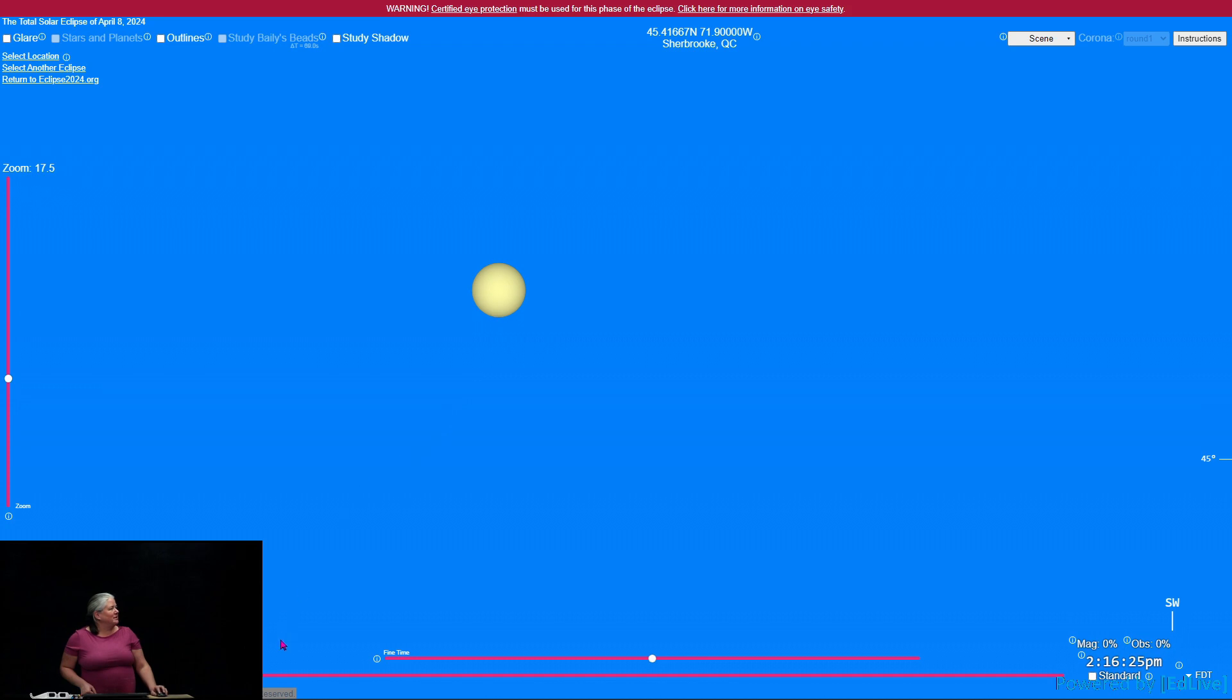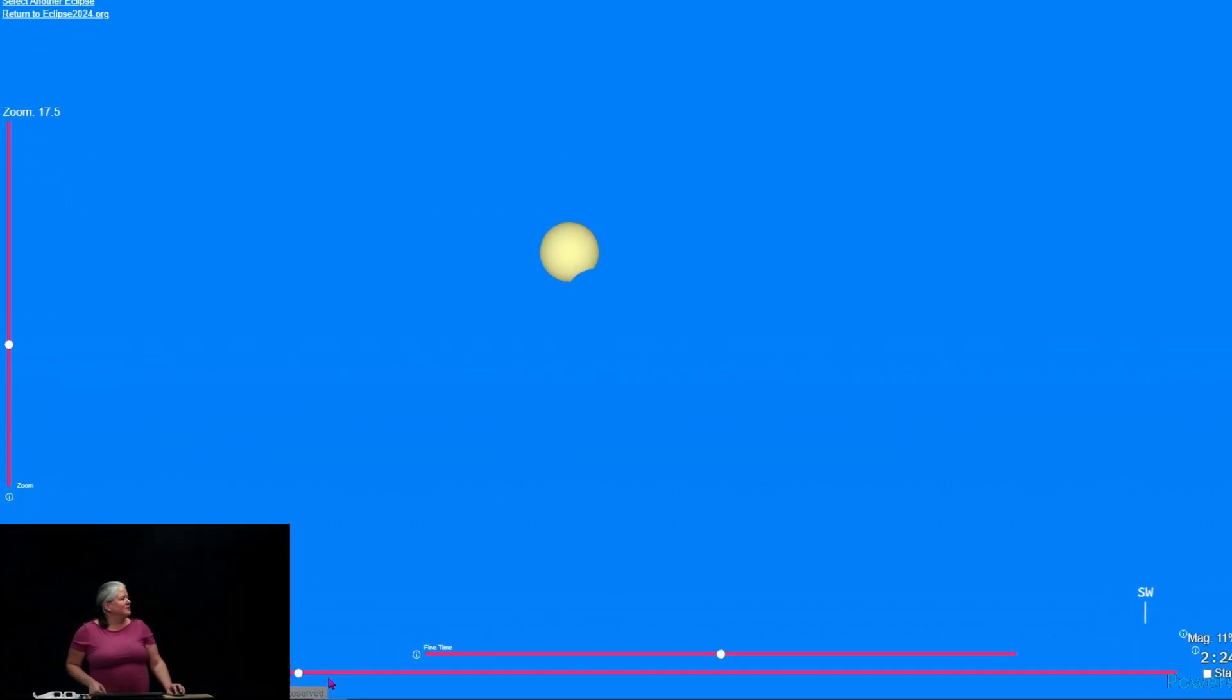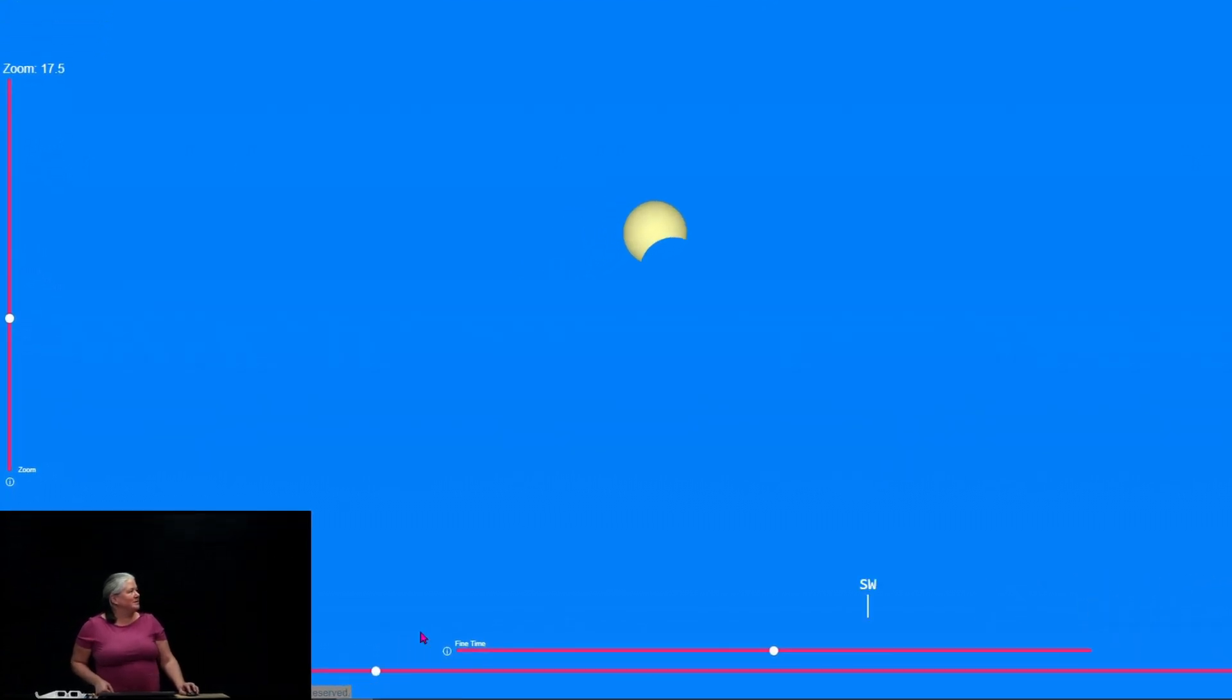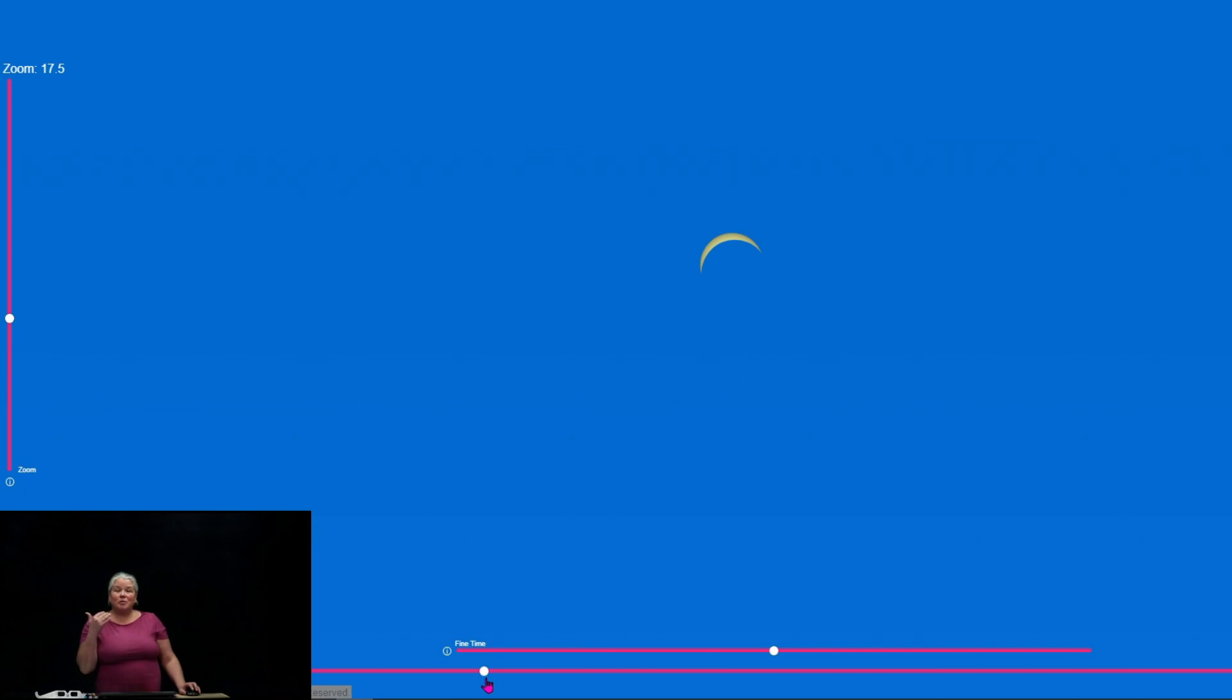So I will move the time forward, and then you will see that part of the Sun appears to be missing. This is actually the beginning of the partial eclipse, when the Moon starts covering the Sun. So the Moon is right here. As the eclipse progresses, you'll see more and more of the Sun covered. But this is what we call the partial eclipse.